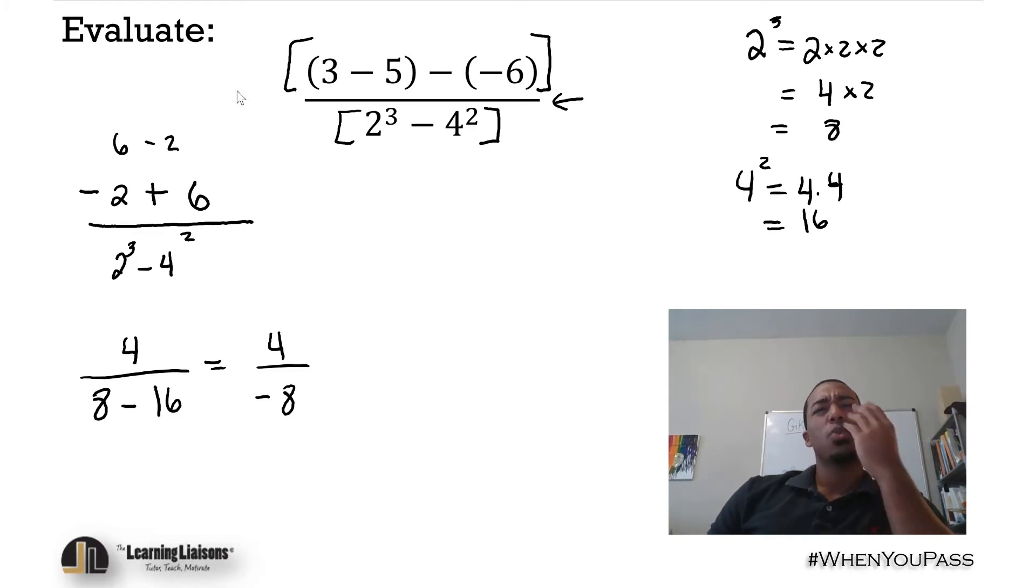So we have 4 divided by negative 8. We can simplify this. 4 and 8, what are they both divisible by? Both by 4. 4 divided by 4 is 1 and 8 divided by 4 is 2. And see, I make mistakes just like you guys do at times. Just make sure you can catch those mistakes.